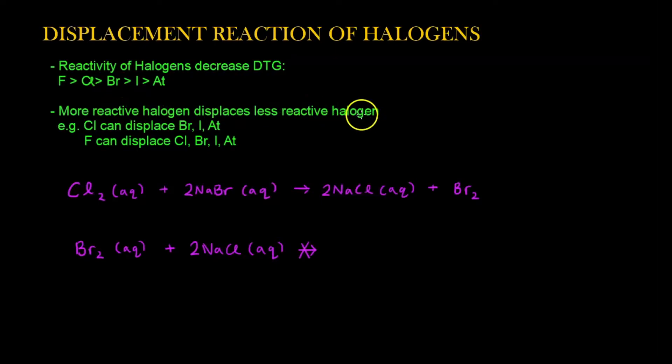The more reactive halogen can displace the less reactive halogen. For example, chlorine is ranked higher than bromine, iodine, and astatine, so it can replace them. If we look at fluorine, it's higher rank than chlorine, bromine, iodine, and astatine, so you can replace the four of them as well.